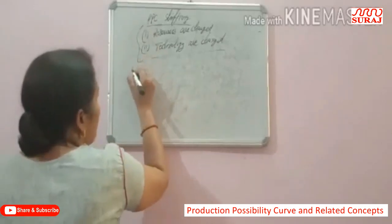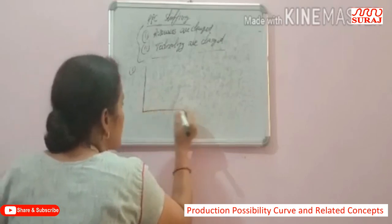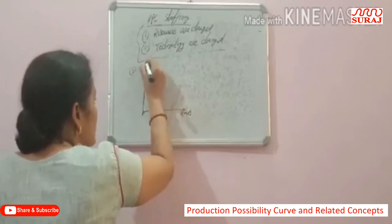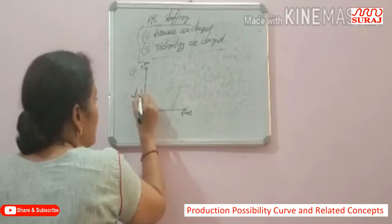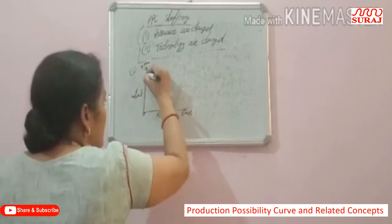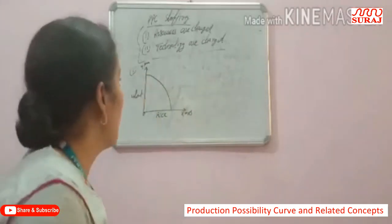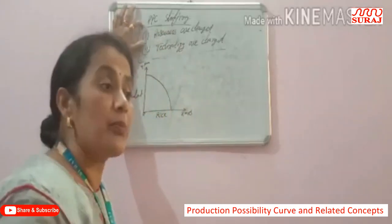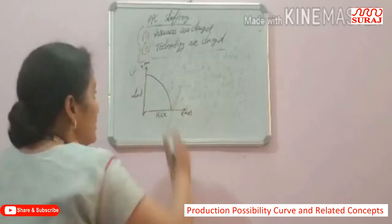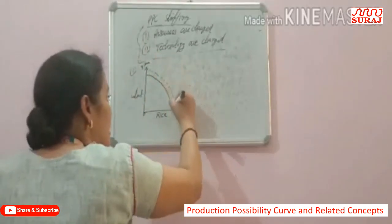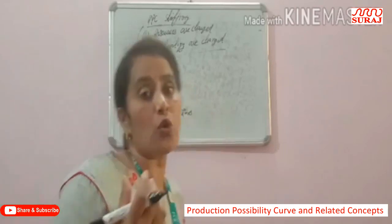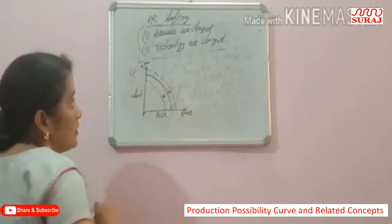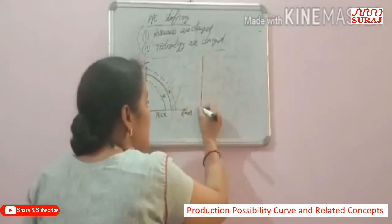For example, we have the Production Possibility Curve, which is concave to the origin, with goods wheat and rice on the axes. When resources increase, the Production Possibility Curve shifts upward. When resources decrease, the Production Possibility Curve shifts downward.